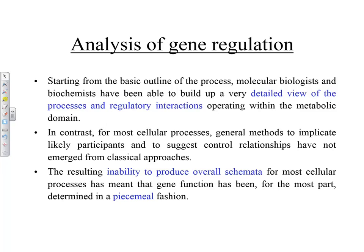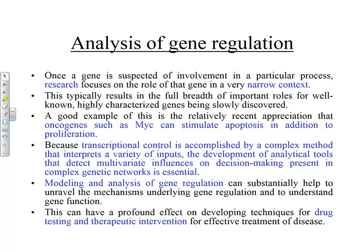For the general class of reactions in cells, we don't know. In contrast, for most cellular processes, general methods to implicate likely participants and to suggest control relationships have not emerged from classical approaches. The resulting inability to produce overall schemata for most cellular processes has meant that gene function has been determined for the most part in a piecemeal fashion — you focus on a small part of the genome, then find out the function.